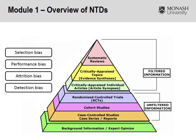It's for that reason that RCTs are placed at the top of the evidence pyramid, followed by cohort studies and case control studies. Cohort studies and case control studies cannot control for those four biases. For example, with a cohort study, you can't necessarily control for performance bias because participants have already been exposed to the risk factor or intervention. Similarly, case control studies have a limited number of biases that can be controlled for.